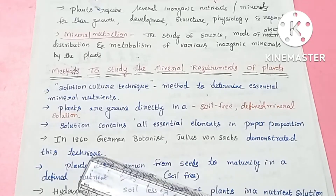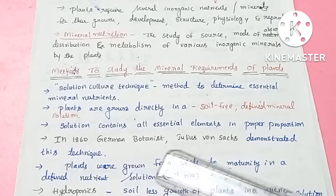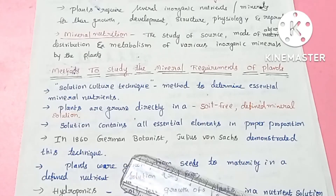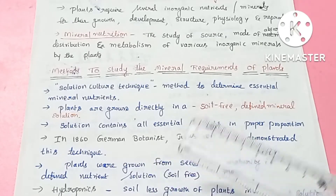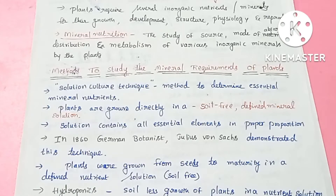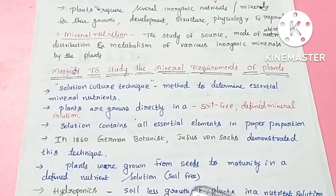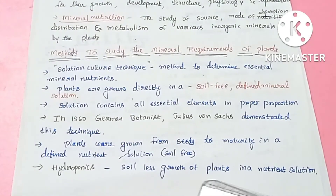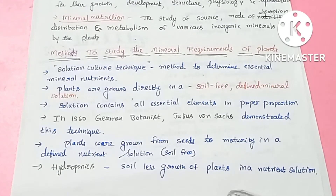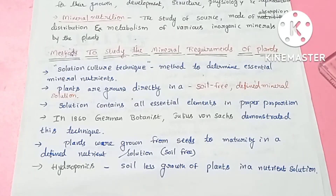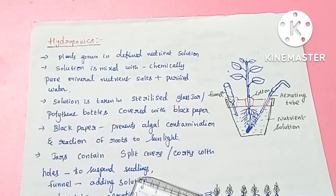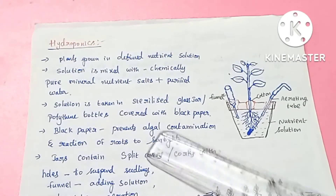This method was first introduced in 1860 by German botanist Julius von Sachs, where plants are grown in a soil-free culture. Soilless growth of plants in a nutrient solution is called hydroponics. If we are growing plants in a soilless, nutrient-defined solution, that technique is called hydroponics.